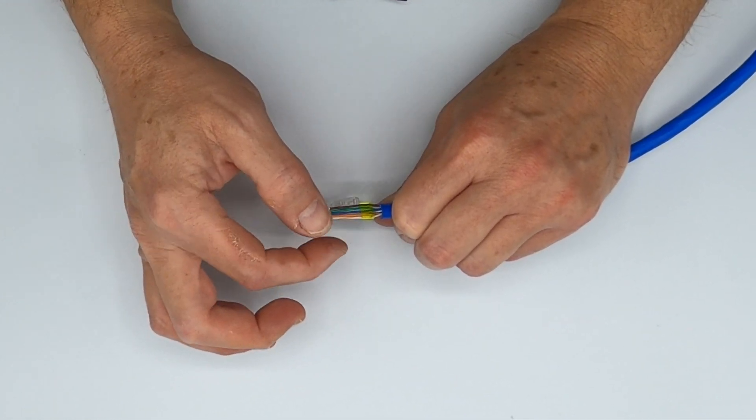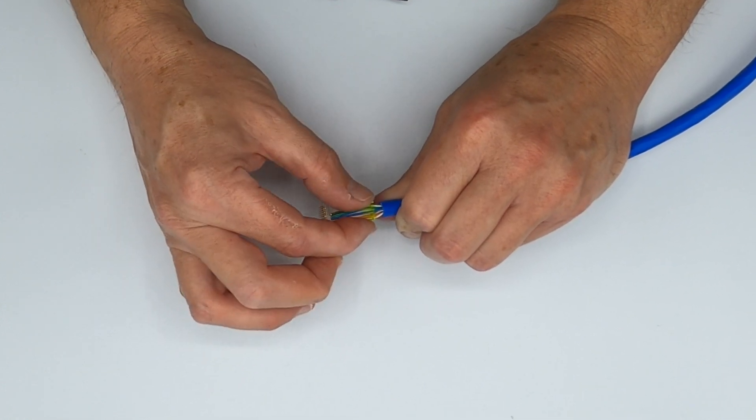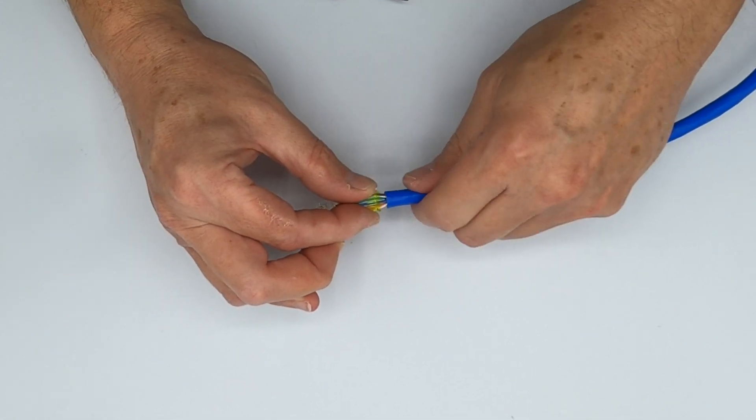So once you've got that load bar on though, you want to confirm that conductors are still right. So white orange, orange, white green, blue, white blue, green, white brown, brown, and they are. And that's about as far down as I'm going to get that load bar.